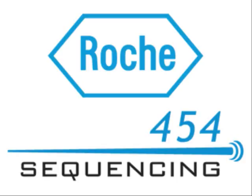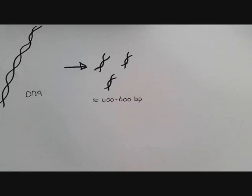454 next-generation sequencing is a technique which has been used to sequence DNA and to diagnose inherited retinal degeneration. The double-stranded DNA is fragmented into pieces of 400 to 600 base pairs by sonication, enzymatic digestion, or nebulization.